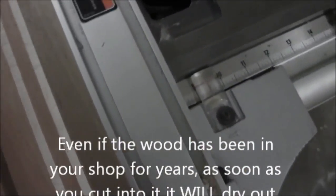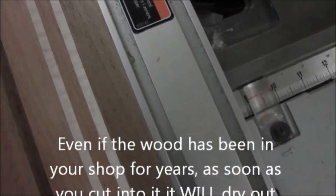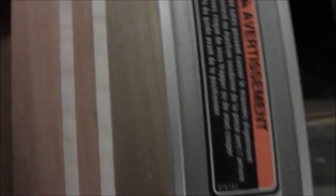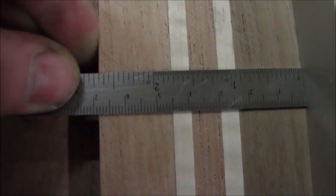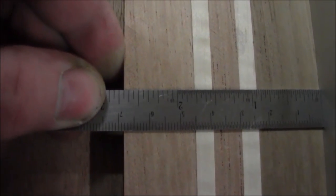Now we've got to make sure that we are exactly 2 and 11 sixteenths wide. And we look at the tape measure, or the ruler here, 2 and 11 sixteenths. Hang on. Good, we're good to go there.